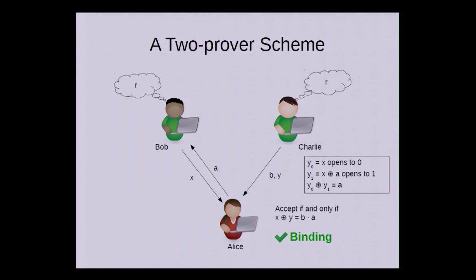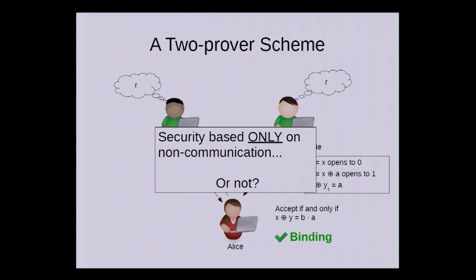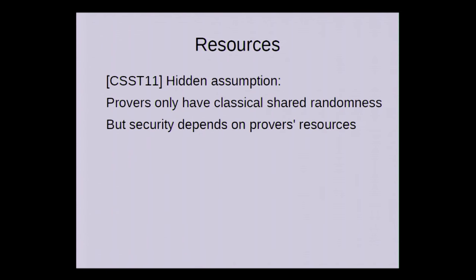So now we have a bit commitment scheme that is secure based only on the non-communication assumption. Or maybe not, as Crépeau, Salvail, Simard, and Tapp pointed out. What they pointed out was that this proof assumes the provers only have shared randomness.